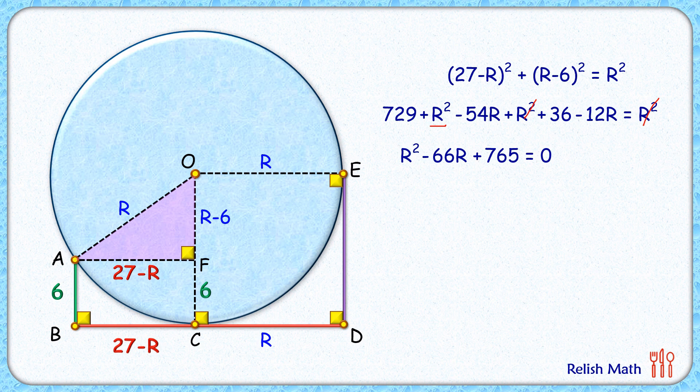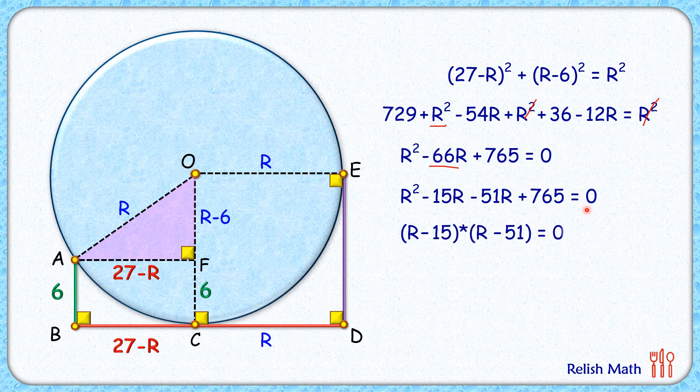Solving it by splitting the middle term, we get R squared minus 15R minus 51R plus 765 equals zero. Solving it, we get two values of R: either 15 centimeters or 51 centimeters. But seeing that 27 minus R would give a negative value, R equals 51 centimeters is not possible. Thus our answer is R equals 15 centimeters. I hope you enjoyed the solution. I will see you in the next video. Till then, tata bye bye.